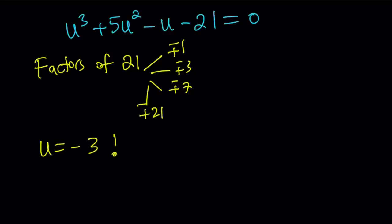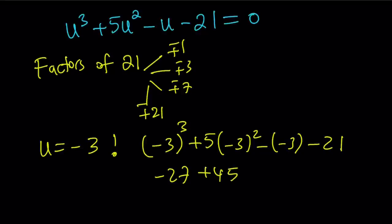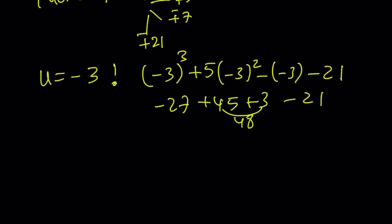So what is that supposed to mean? It means u equals negative 3 is a solution. But let's go ahead and plug it in to make sure. Negative 3 cubed is negative 27. Negative 3 squared is 9. 5 times 9 is 45. That's a plus 3. That's a minus 21. This is 48. 48 minus 48 equals 0. Hopefully you're convinced that u equals negative 3 works.